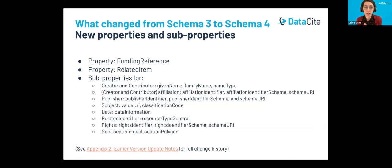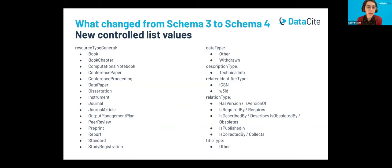This means that if your schema 3 DOIs either don't have that resource type property, or are using contributor type funder, these will not be compatible with schema 4 until you make changes. In addition to those two breaking changes, there have also been numerous other additions since schema 3. When you're transitioning to schema 4, you can start taking advantage of all these new properties and subproperties, including funding reference and related item, as well as subproperties like affiliation identifier and the new publisher identifier subproperty just added in 4.5. Because schema 4 requires resource type general, please take a look at this expanded list and select the most specific option for each of your DOIs.